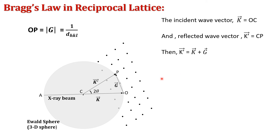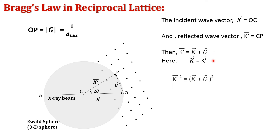If the magnitudes of the two vectors are the same, that is |k'| = |k|, this means the scattering is elastic scattering, and only then do the magnitudes of the two vectors become equal. Using that condition, we simplify k' = k + G by squaring both sides.